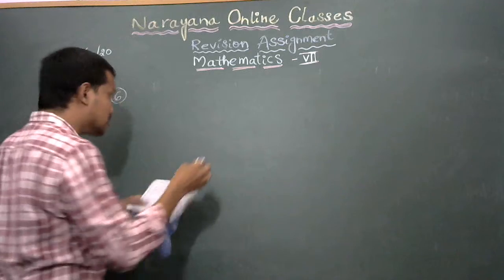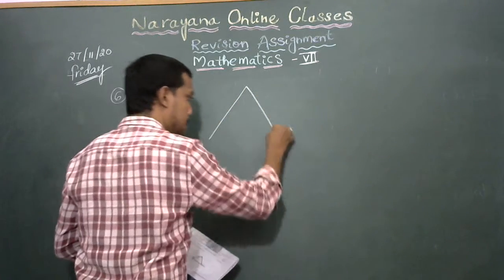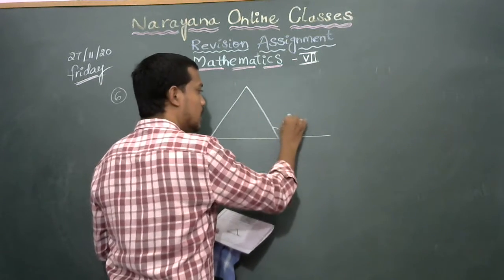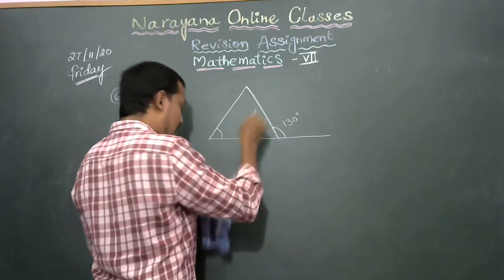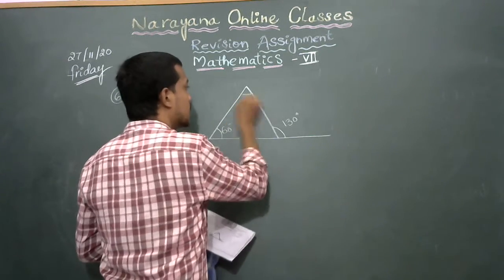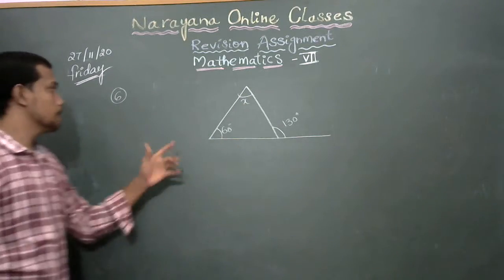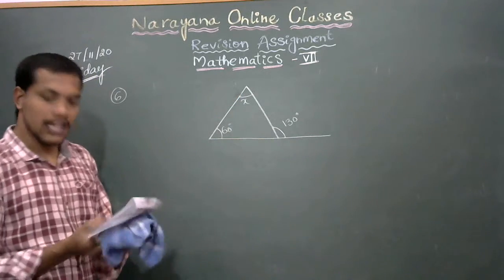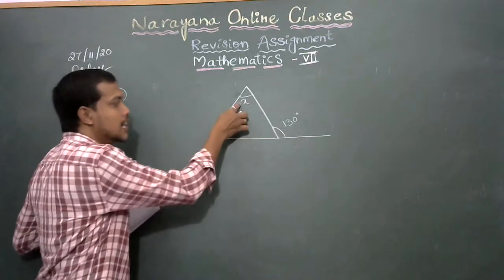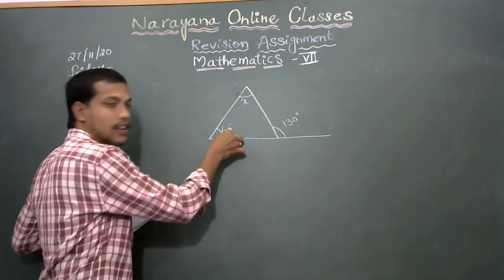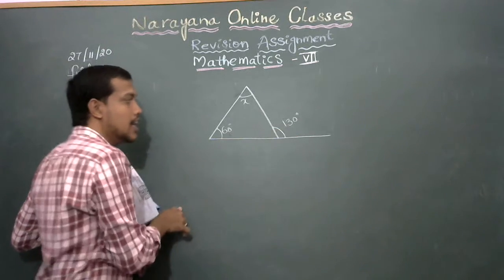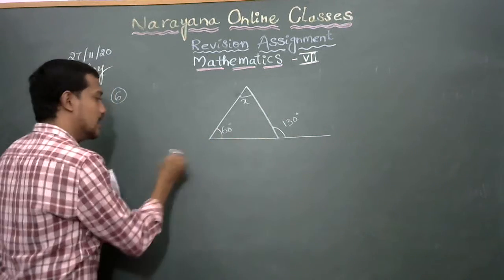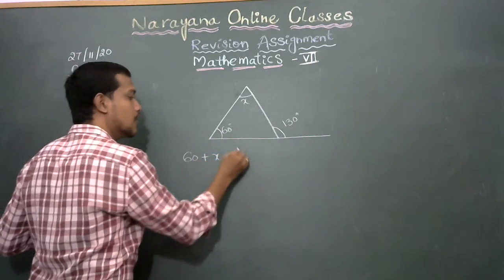Now, in the sixth question, a diagram is given. This angle is 130 degrees, this angle is 60 degrees, and this angle is x. Find the value of x. These two are interior angles of the triangle, and 130 is the exterior angle of the triangle.